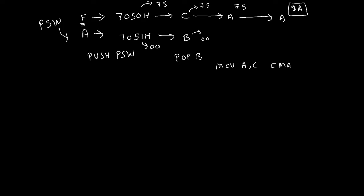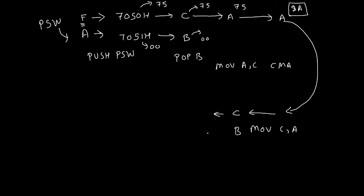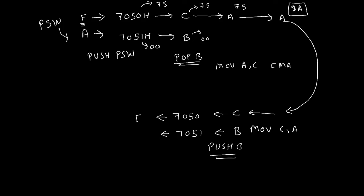But we want that value inside the flag register, so everything we will do in reverse. From the accumulator, we will transfer it to the C register by writing MOV C, A. Then we will transfer the content of the C and B registers to 7050H and 7051H by writing PUSH B — which is the opposite of the POP B we used earlier.